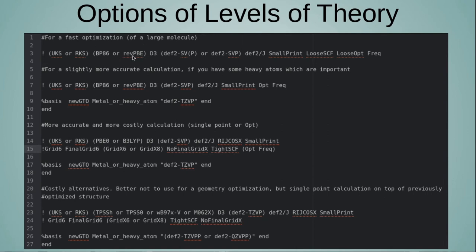For a fast optimization, I currently use a lot of rPBE with either the def2-SVP or def2-SV(P) basis sets — the latter excludes polarization functions on hydrogens and is even cheaper. You can also use loose SCF and loose optimization thresholds to optimize very large molecules quickly.